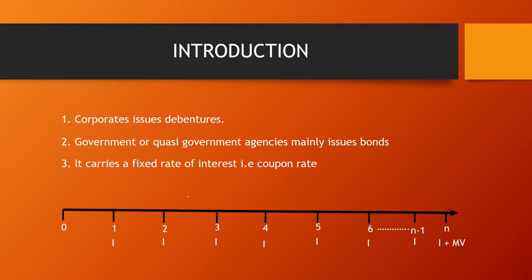As we learned in the last lecture, if we make a number line, our time period is known because in the case of debentures and bonds the maturity period is fixed. At the end of every year we pay interest, and at the nth period the company also pays the maturity value to bond holders and debenture holders.